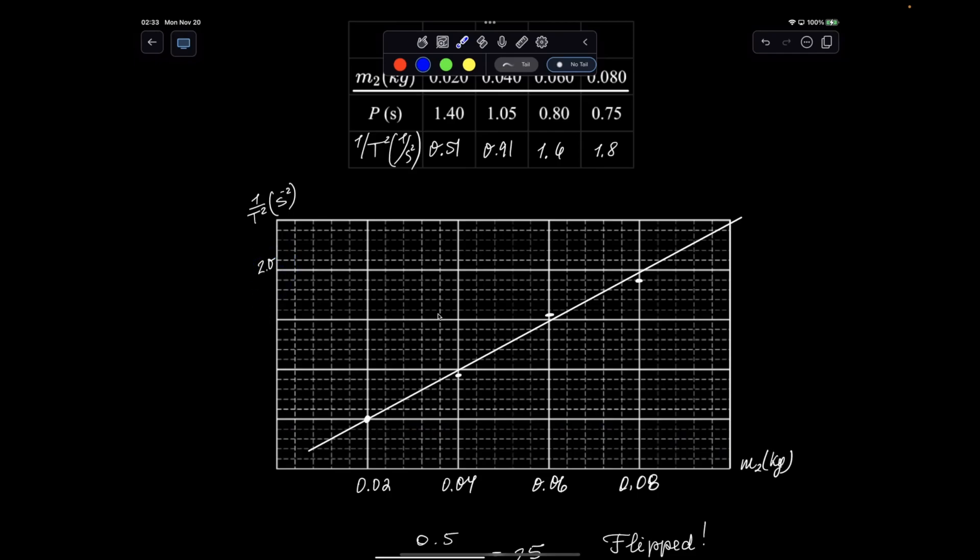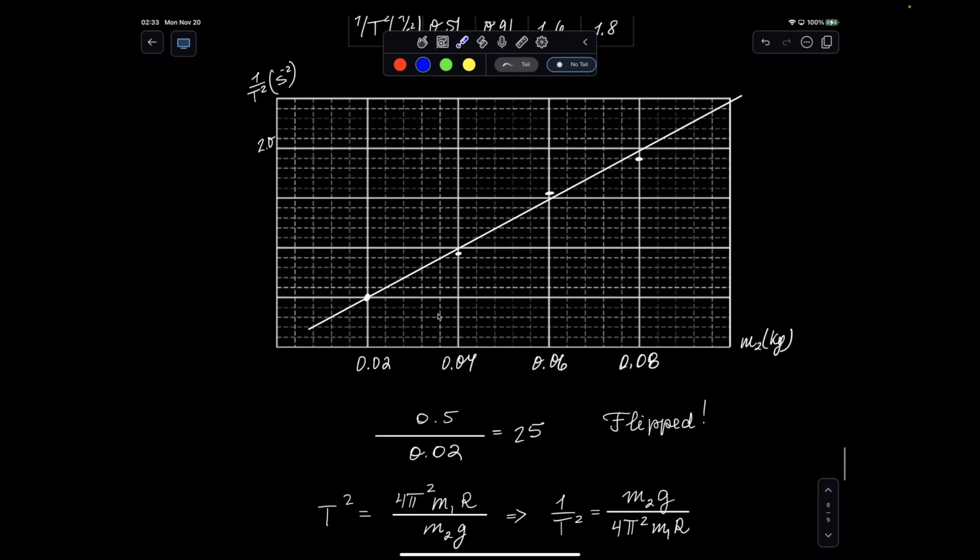And then we have 2. So I went 0.5, 1, 1 and a half, 2. And that gave me this nicely looking graph. And I went from here to, what did I choose? 0.02...